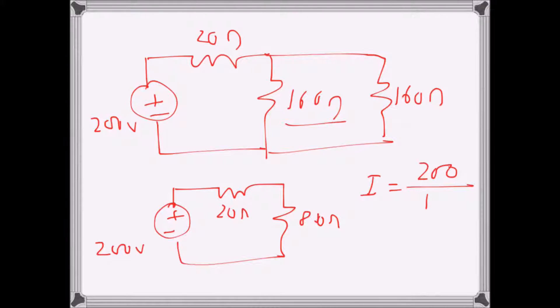So power dissipated by the resistance, by the circuit, is I squared R. So I squared is 2 squared, and R is 100, so that is 4 times 100 which is 400 watts.